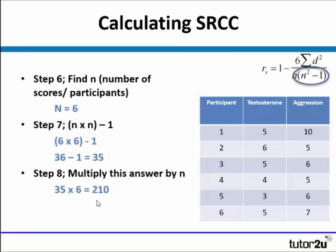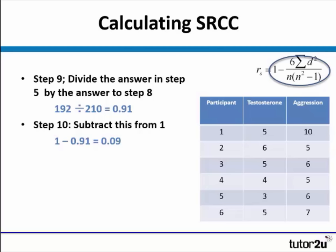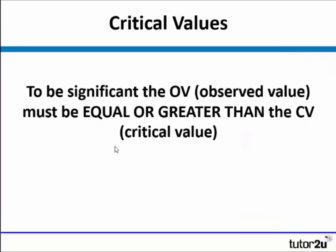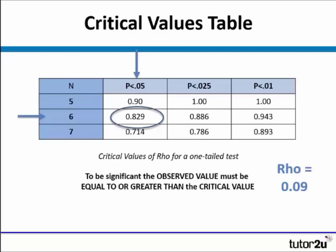We then need to divide the answer we calculated previously — the top aspect of the formula — by the answer we just calculated. So 192 divided by 210 gives us 0.91, and we then subtract this from 1, which is the final element of the formula. So we then have to use that result to look up the critical values. To be significant for Spearman's rank, our observed value must be equal to or greater than the critical value. We have a critical values table here for a one-tailed test, which is what we're looking at — we're saying there will be more testosterone and more aggression.